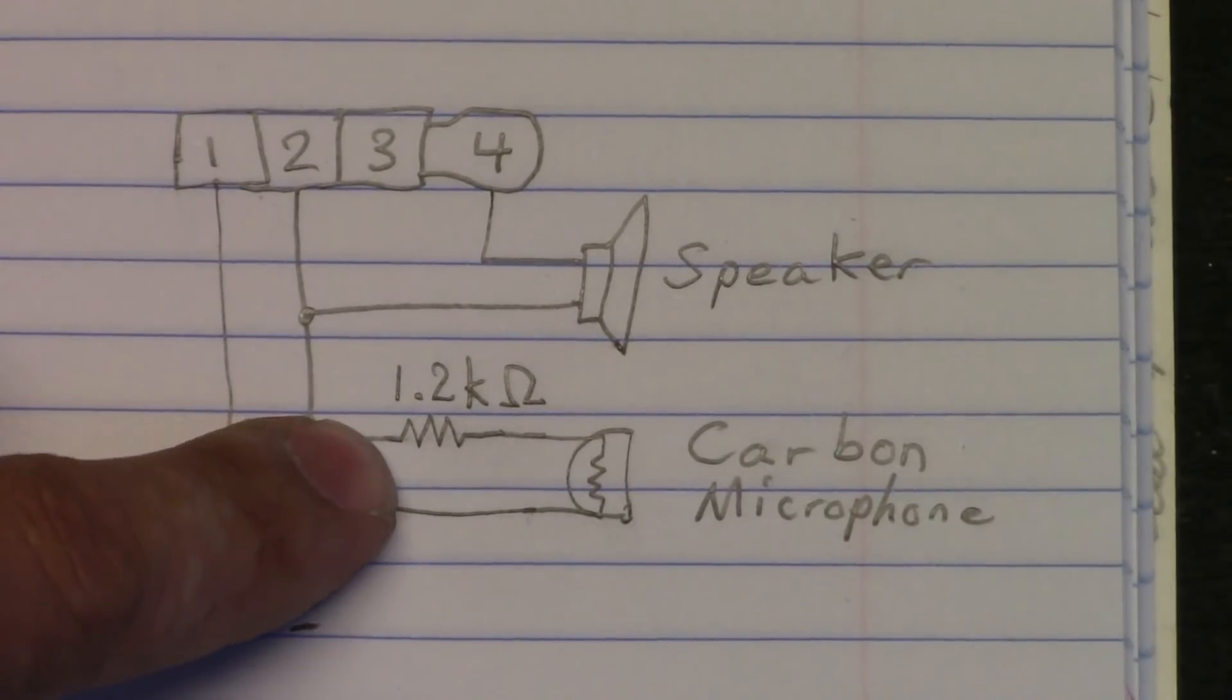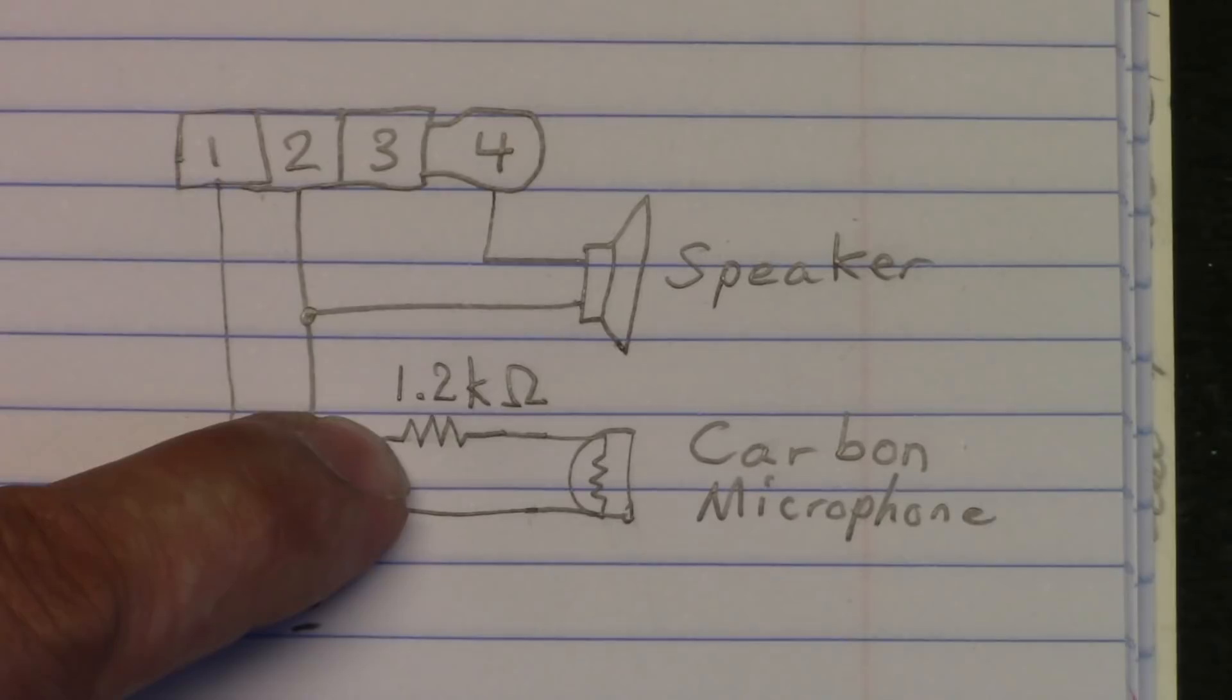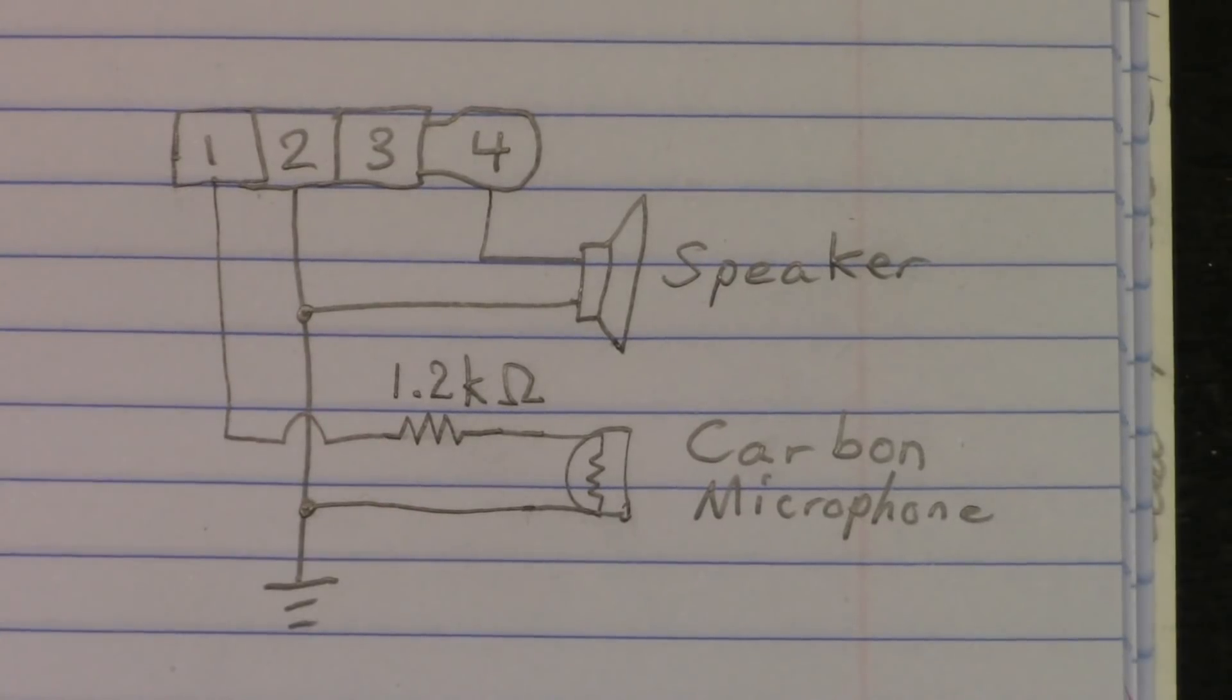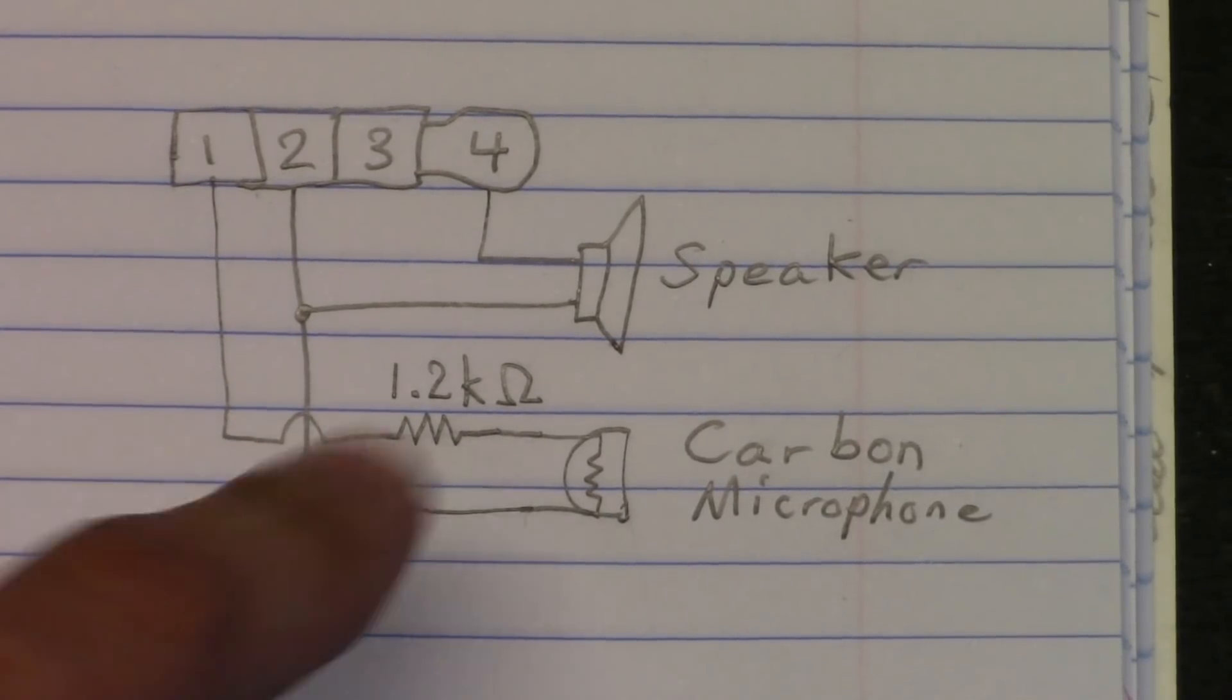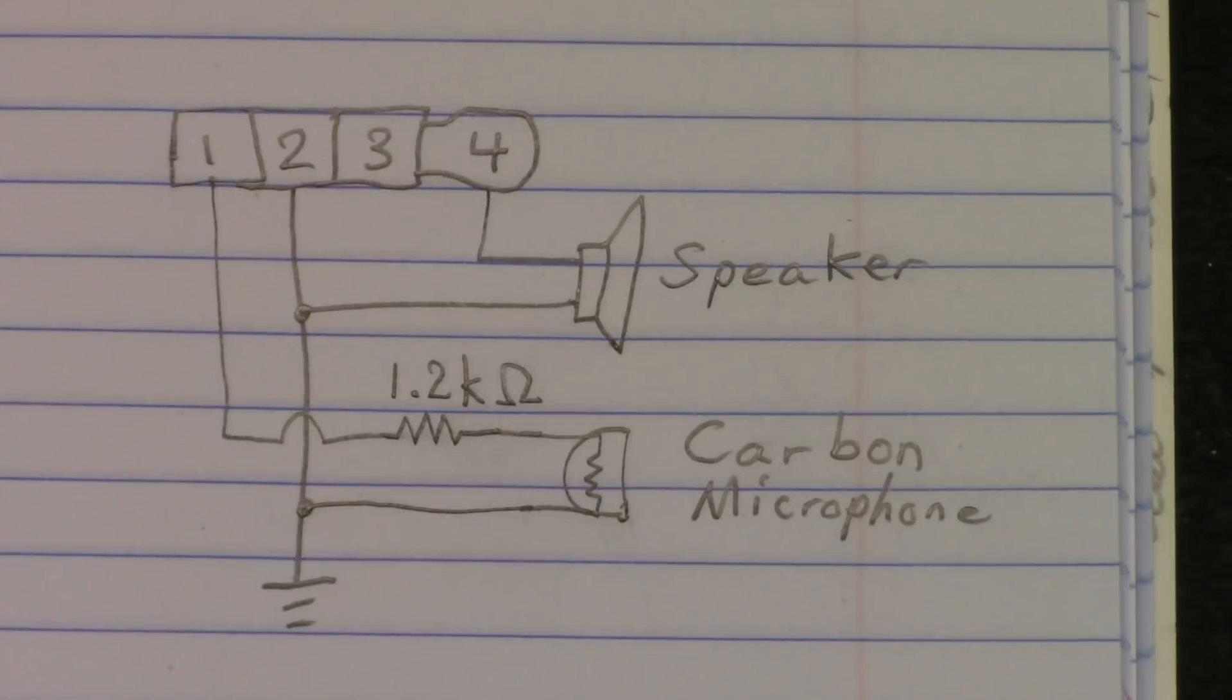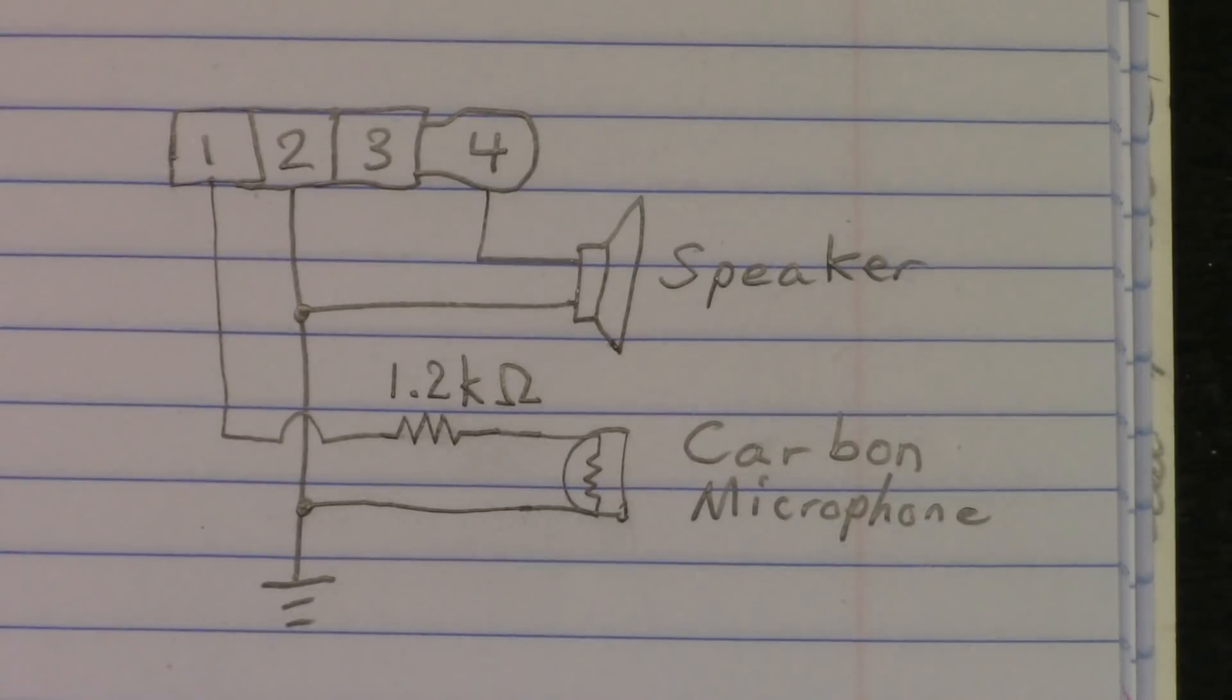The 1.2 kilohm resistor, of course, as you saw earlier, is important. Because without it, the phone will not detect the handset as having its own microphone. So if you want to use the carbon mic, you need the series 1.2 kilohm resistor. It will obviously not affect the loudness of the sound. As you have heard, it's quite loud and, albeit grainy and old fashioned, clear.